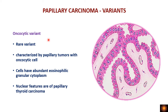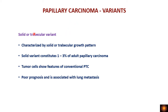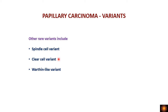The diffuse sclerosing, tall cell, and hobnail variants all have a worse prognosis. The oncocytic variant has papillae lined by cells with abundant eosinophilic granular cytoplasm (oncocytic cells), while the tumor cell nuclei show features similar to conventional PTC. Other rare variants include the solid or trabecular variant — with solid sheets or trabecular arrangement and poor prognosis associated with lung metastasis — as well as spindle cell, clear cell, and Warthin-like variants.